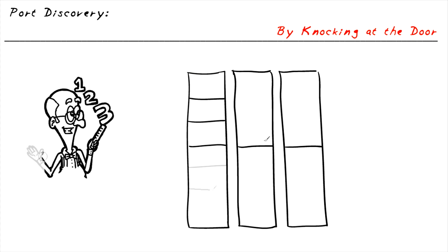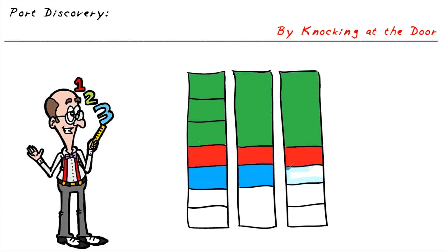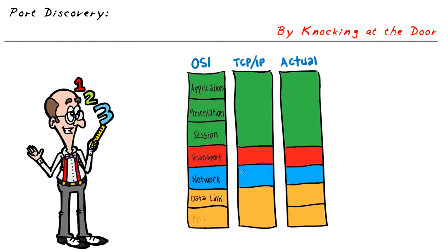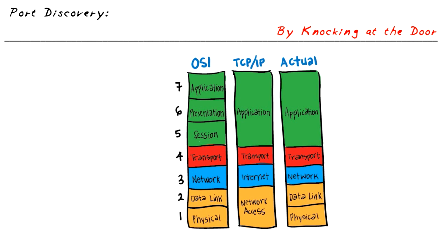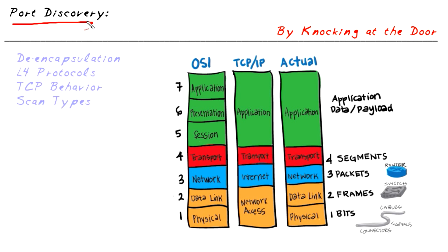There are three basic benefits of doing Port Discovery. Number one, if we identify what ports are open or available, that usually indicates the type of service that's available. And the reason that Port Discovery is fairly easy to do is because of how protocols behave predictably.